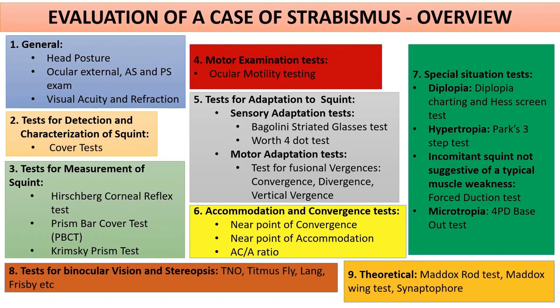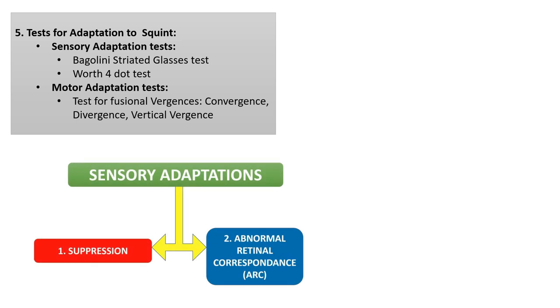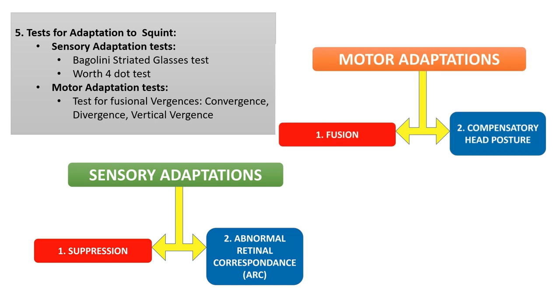We now move on to the tests for adaptation to squint, which include sensory adaptation tests — the Bagolini striated glasses test and the Worth 4 dot test — and motor adaptation tests, which include tests for fusional vergences. I would recommend going through the first video lecture series for a thorough understanding of sensory and motor adaptations, which will make these tests much easier to understand.